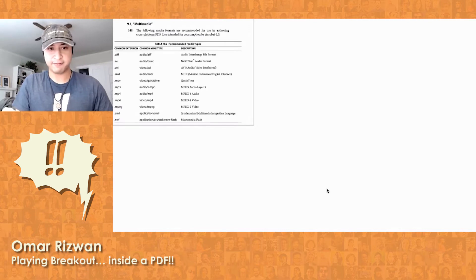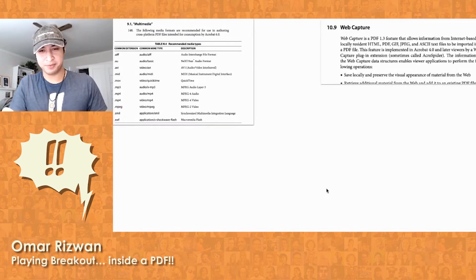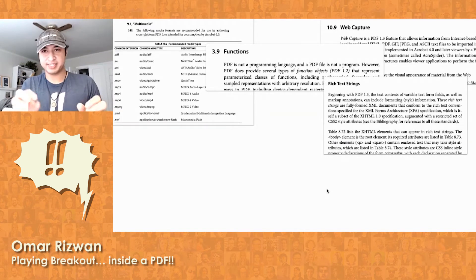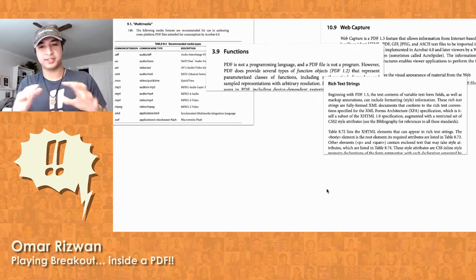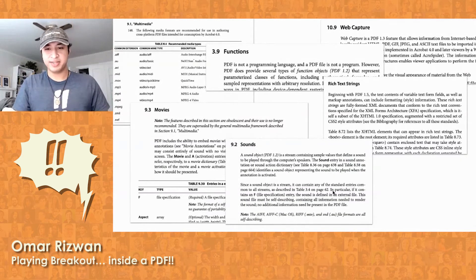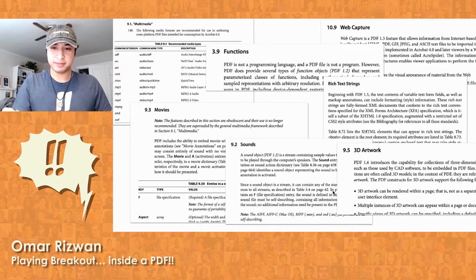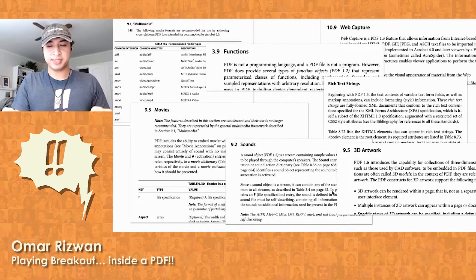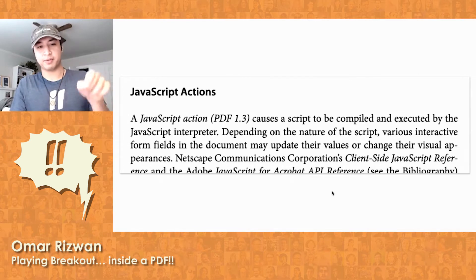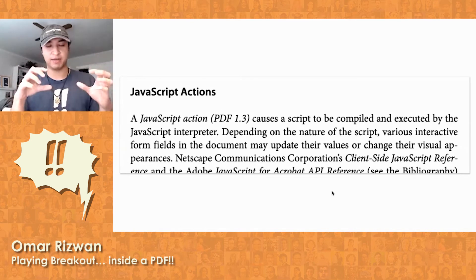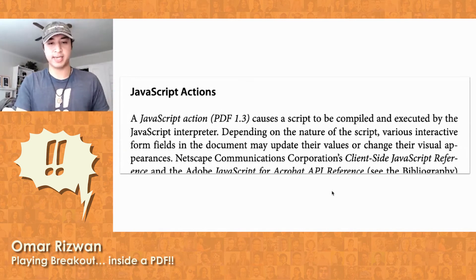You can put Flash files into a PDF, chunks of web pages, functions inside a PDF to tell the viewer how to render colors, rich text inside a form field — there's actually a subset of XHTML you're allowed to put inside PDFs. You can put video, sound, even 3D models into a PDF, which I think is pretty wild. But for the purpose of this talk and making the Breakout game, what I'm interested in is that you can put JavaScript into a PDF — JavaScript actions that run when you first open the PDF or when you hover over something.